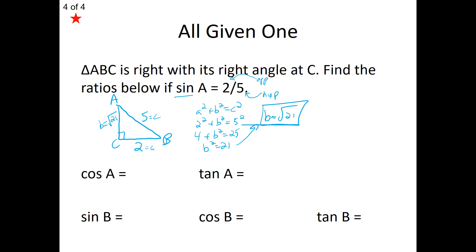Now we can apply cosine and tangent to find our other missing ratios. Cosine of angle A is adjacent over hypotenuse — the adjacent side is root 21, so cosine of A is root 21 over 5. Tangent of angle A is opposite over adjacent: 2 over root 21. Rationalizing that gives us the fully rationalized form. Moving to angle B — sine of B is opposite over hypotenuse, which is root 21 over 5. Cosine of B is adjacent over hypotenuse, which is 2 over 5. And tangent of angle B is opposite over adjacent, giving us the clean ratio of root 21 over 2.